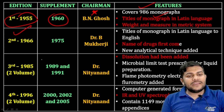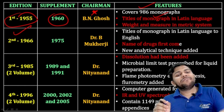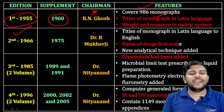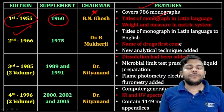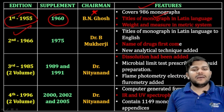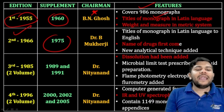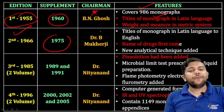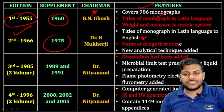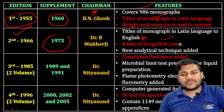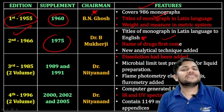The second edition came in 1966, eleven years after the first. Its supplement was in 1975, under the chairmanship of Dr. B. Mukharji. Importantly, the name of the drug first appeared in the second edition of the pharmacopoeia, published in 1966, with titles moving to English.